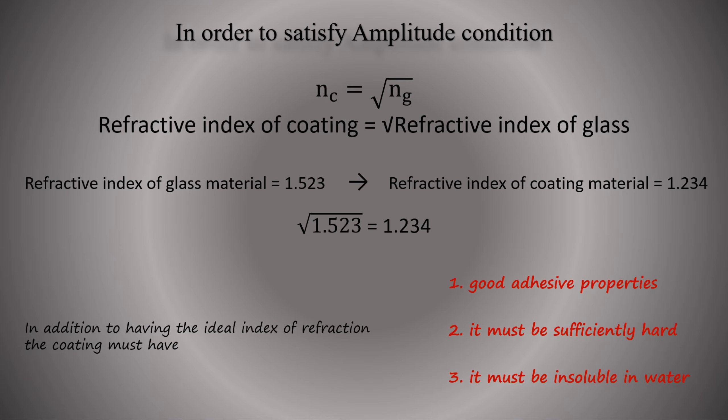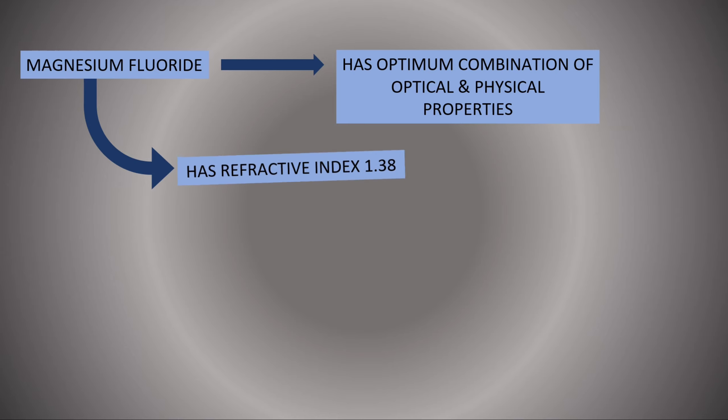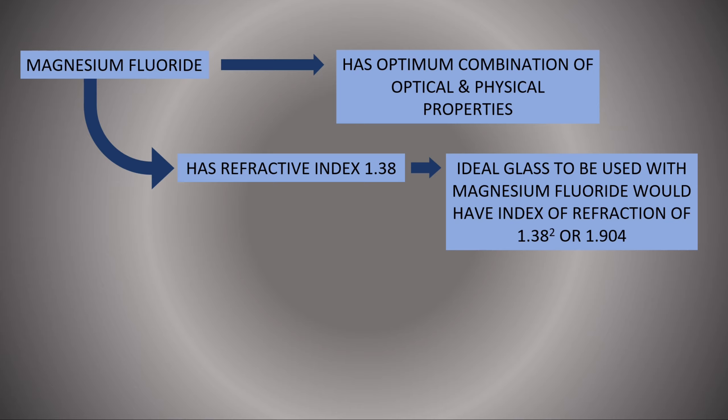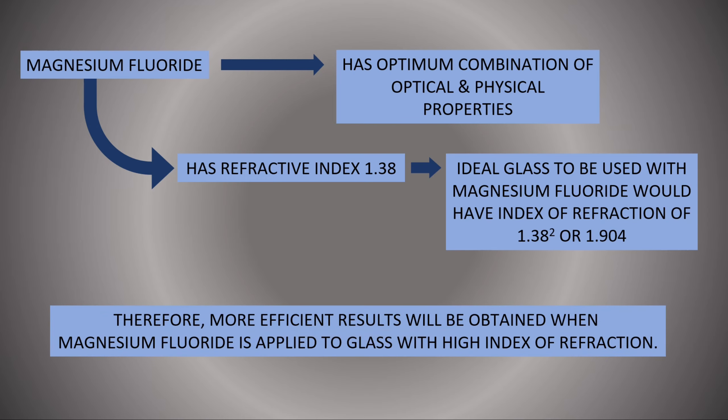A compromised material must therefore be accepted in order to obtain a sufficiently hard coating that is water resistant. Magnesium fluoride has the optimum combination of optical and physical properties and is used almost universally for anti-reflective coatings of glass lenses. Its refractive index of approximately 1.38 is too high to completely satisfy the amplitude condition when applied to ophthalmic crown glass. This results in incomplete neutralization of reflections with the result that the reflectance of a surface cannot be reduced to zero for any wavelength. Therefore, more efficient results will be obtained when magnesium fluoride is applied to glasses with high index of refraction.